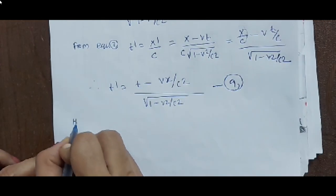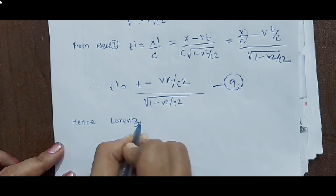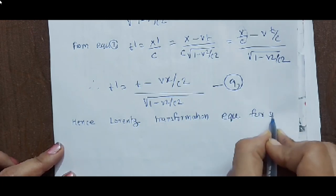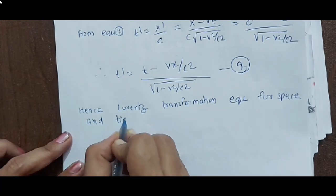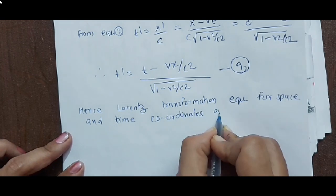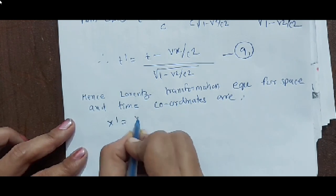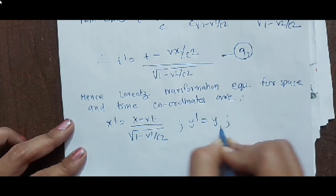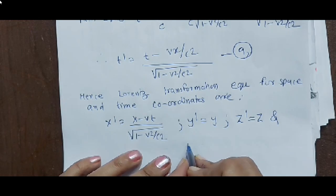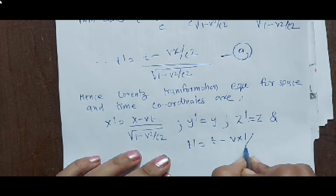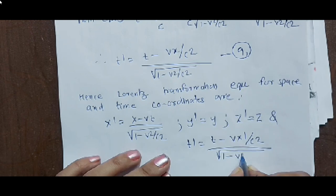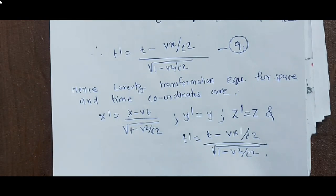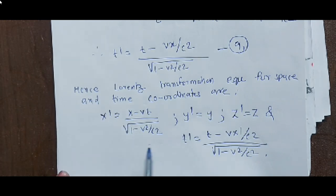Hence the Lorentz transformation equations for space and time coordinates are: x' = (x - vt) / √(1 - v²/c²), y' = y, z' = z, and t' = (t - vx/c²) / √(1 - v²/c²). Similarly, the inverse Lorentz transformation equations can be written by replacing v with -v and replacing x, y, z, t with x', y', z', t' respectively.